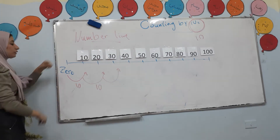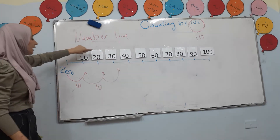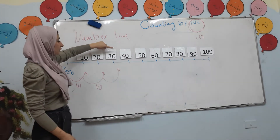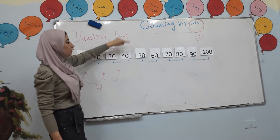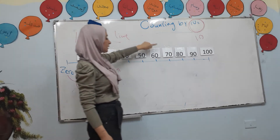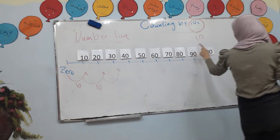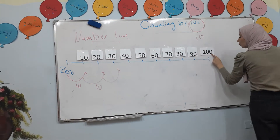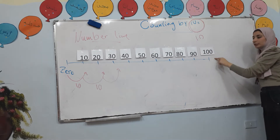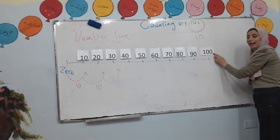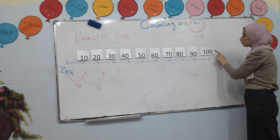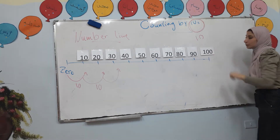Count with me: 10, 20, 30, 40, 50, 60, 70, 80, 90, 100! It's called 100.